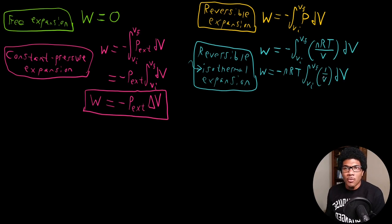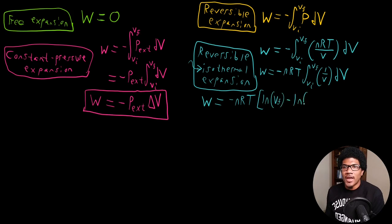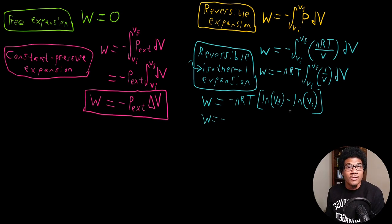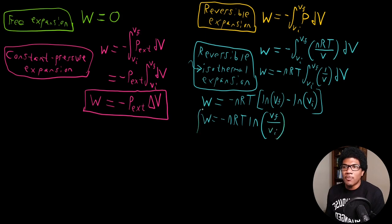The integral of 1 over V is the natural log of V. So we have negative NRT times the quantity ln(VF) minus ln(VI). Using the property of natural logs, this is written as W equals negative NRT times ln(VF/VI). That is the work for a reversible isothermal expansion.